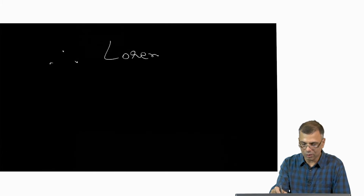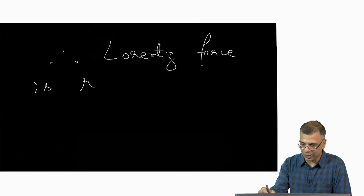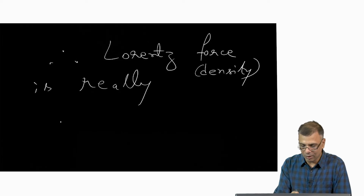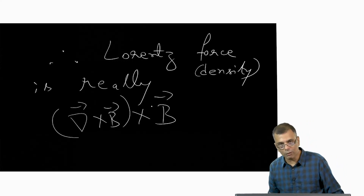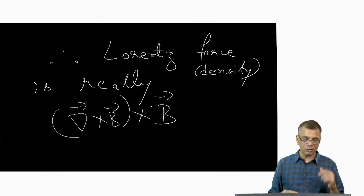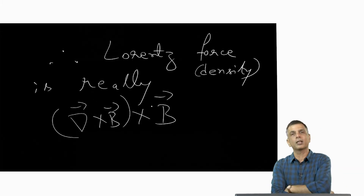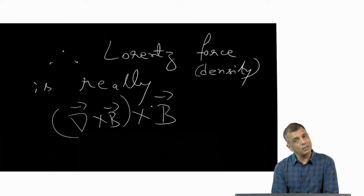Therefore, the Lorentz force density is really curl of B cross B. So if someone asks what is the one new element of force that appears in magnetohydrodynamics as opposed to regular neutral hydrodynamics, what is the new thing?